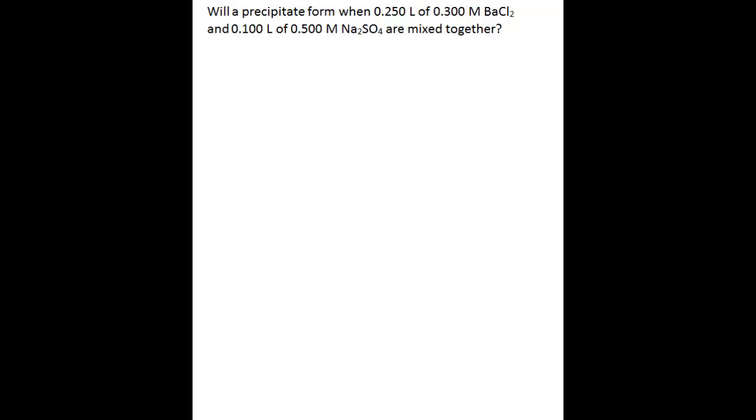Hi, this is Sonia Doucette. In this video, I'll show you how to predict whether a precipitate will form when two solutions containing different compounds are mixed together, and how you determine this by calculating the ion product constant, which is abbreviated as IP.